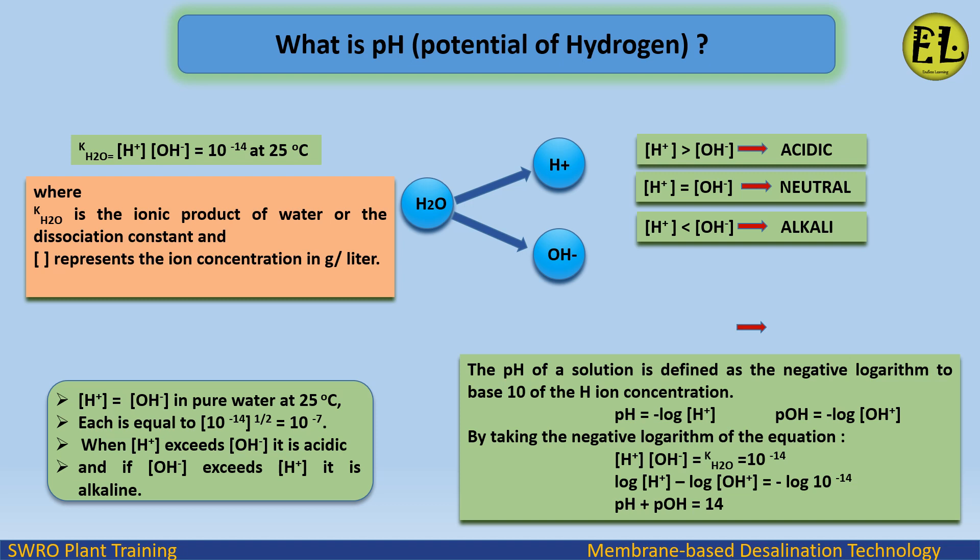The pH of a solution is defined as the negative logarithm to base 10 of the H⁺ ion concentration: pH = −log[H⁺]. Similarly, pOH = −log[OH⁻]. By taking the negative logarithm of the water equilibrium equation [H⁺][OH⁻] = Kw = 10⁻¹⁴, we get: −log[H⁺] − log[OH⁻] = −log(10⁻¹⁴), which gives pH + pOH = 14.